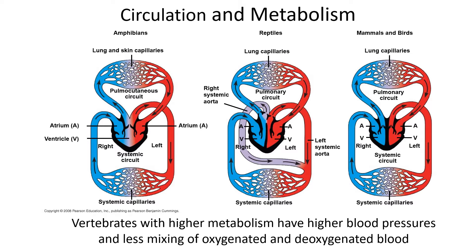My background is comparative anatomy and evolutionary biology, so I'm going to talk about frogs and reptiles very briefly. In fish, the heart pumps blood out to the gills, carbon dioxide is dumped off, oxygen is taken in, and blood flows to systemic capillaries where oxygen is released and carbon dioxide is picked up — a simple loop. In other vertebrates — tetrapods, things with four limbs — we have two circuits: a pulmonary circuit and a systemic circuit.